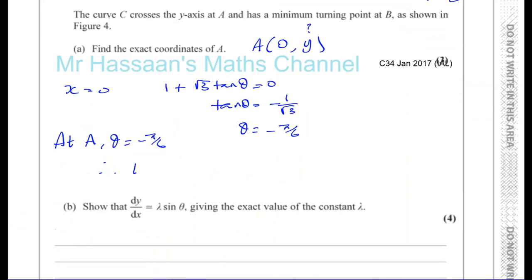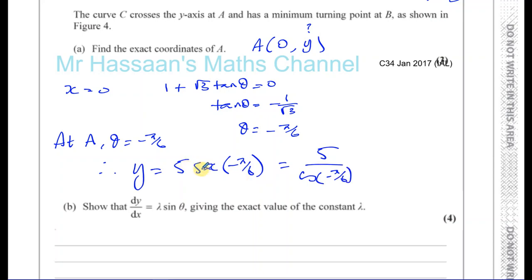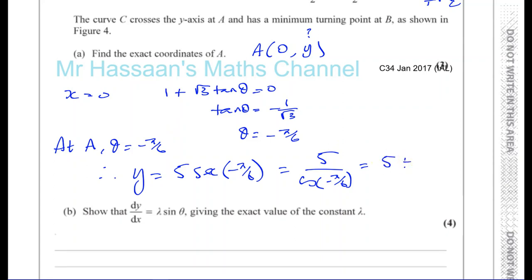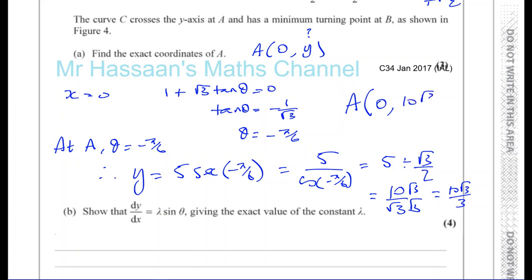Therefore, y equals 5 times secant of minus pi over 6, which is the same as 5 over cosine of minus pi over 6. Cosine of pi over 6 is root 3 over 2, and cosine is positive, so it's plus root 3 over 2. So y equals 5 divided by root 3 over 2, which is 10 over root 3, and rationalizing gives 10 root 3 over 3. The exact coordinates of A are (0, 10 root 3 over 3).